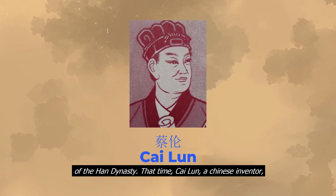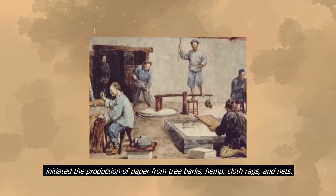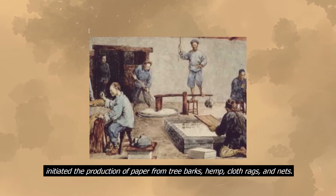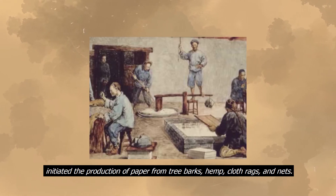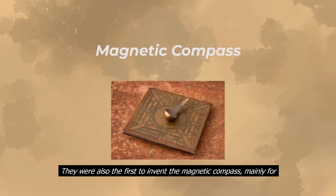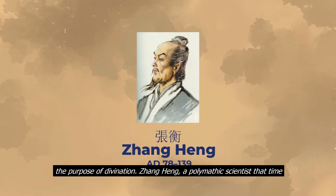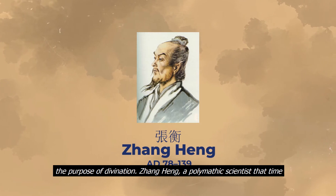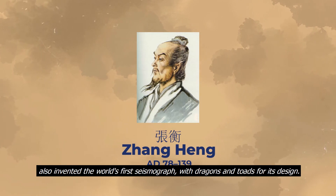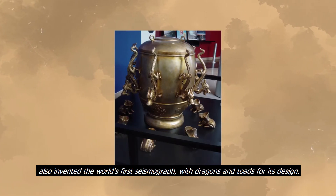The opening of the Silk Road was probably the major economic achievement of the Han Dynasty. At that time, Cai Lun, a Chinese inventor, initiated the production of paper from tree barks, hemp, rags, and nets. They were also the first to invent the magnetic compass, mainly for the purpose of divination. Zhang Heng, a polymathic scientist at that time, also invented the world's first seismograph, with dragons and toads for its design.